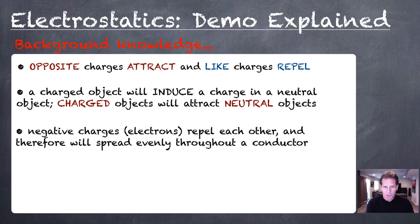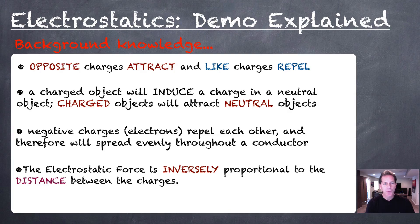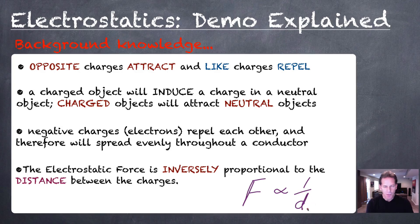Negative charges — the electrons, which are the particles that are free to move in conductors — will repel each other. So given a chance, they will spread throughout the conductor evenly. And finally, this electrostatic force between charged objects is inversely proportional to the distance between the objects. In other words, if they're farther apart, the force will be weaker.